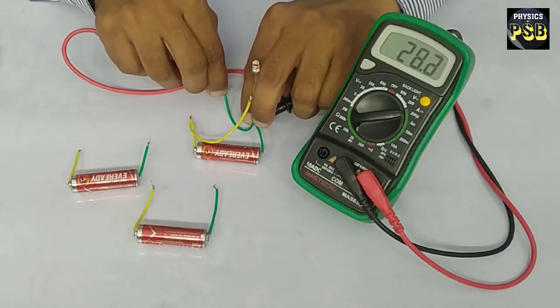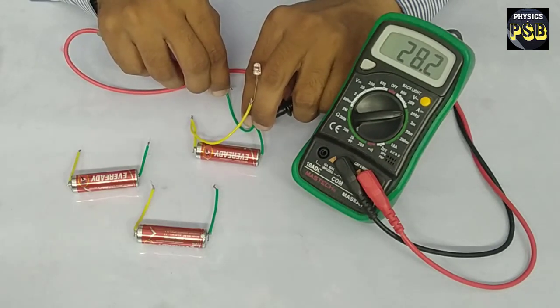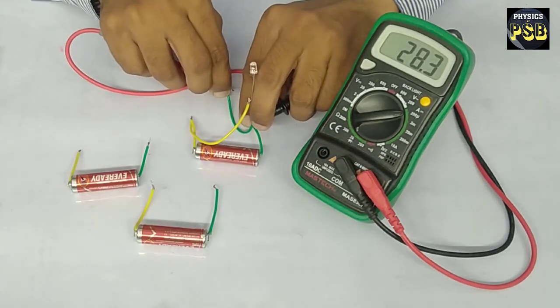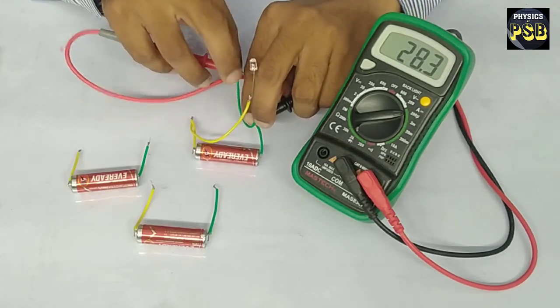The LED glows and the multimeter reads 28 microampere of current which is flowing through this LED.